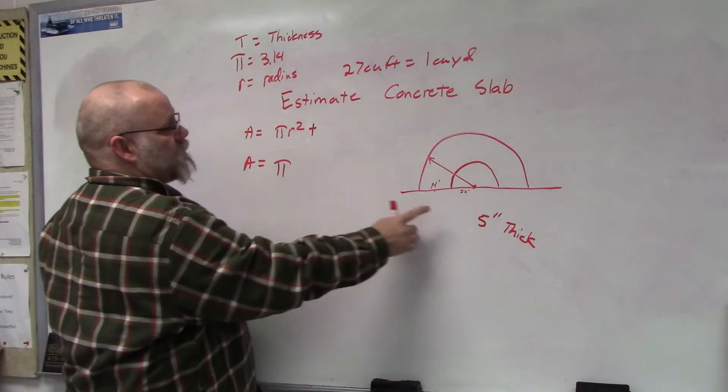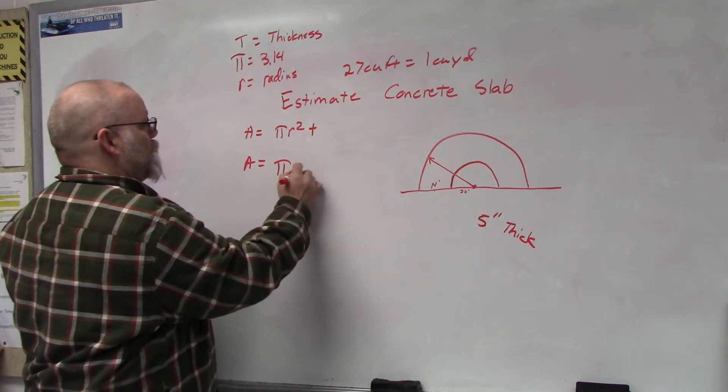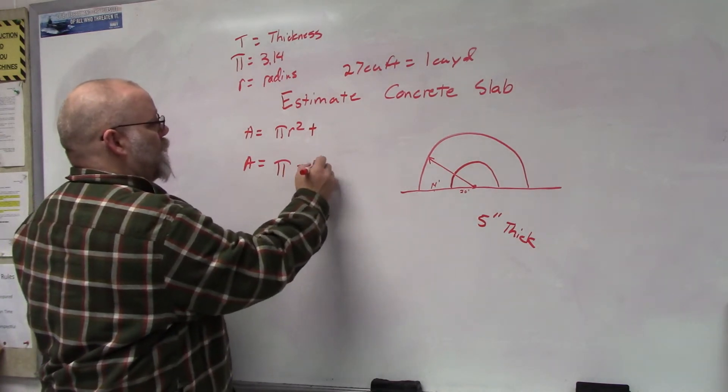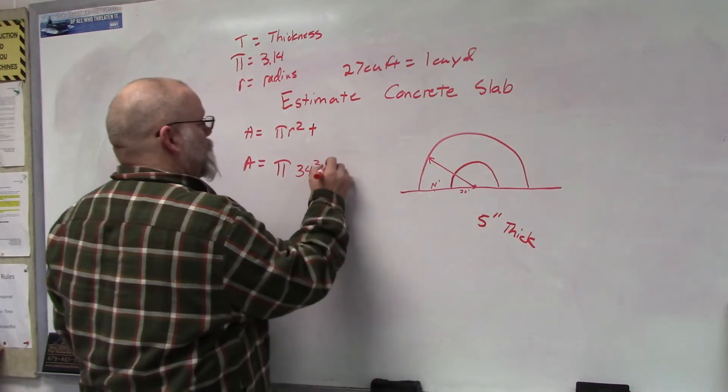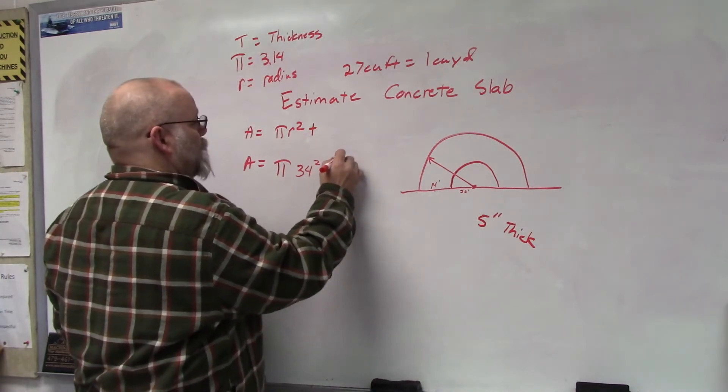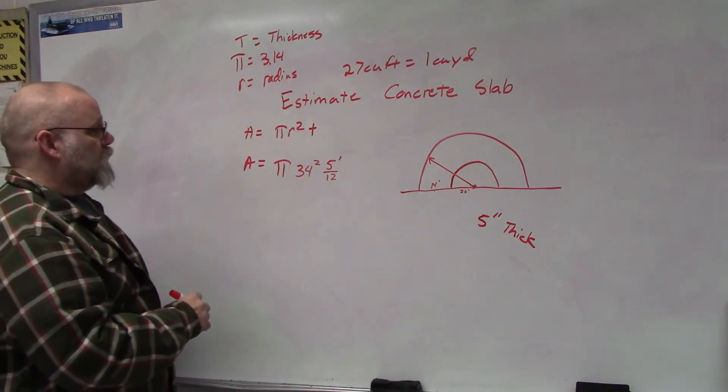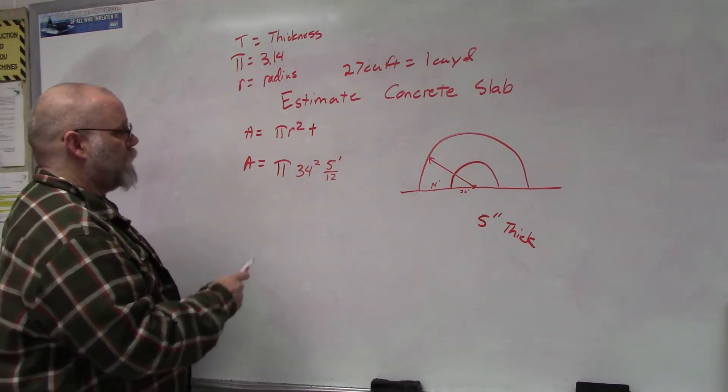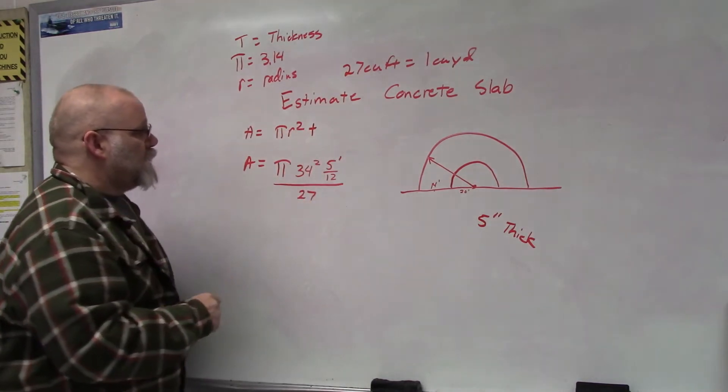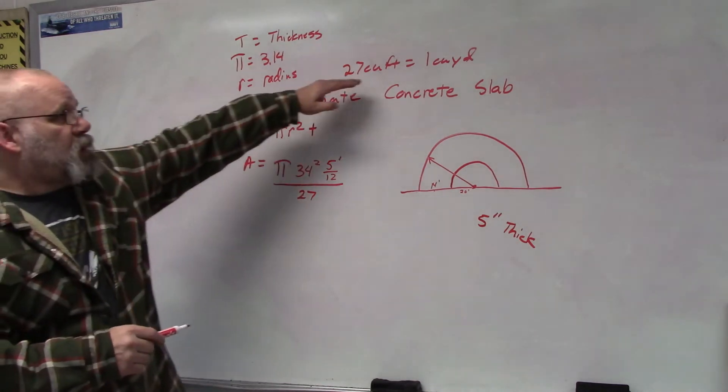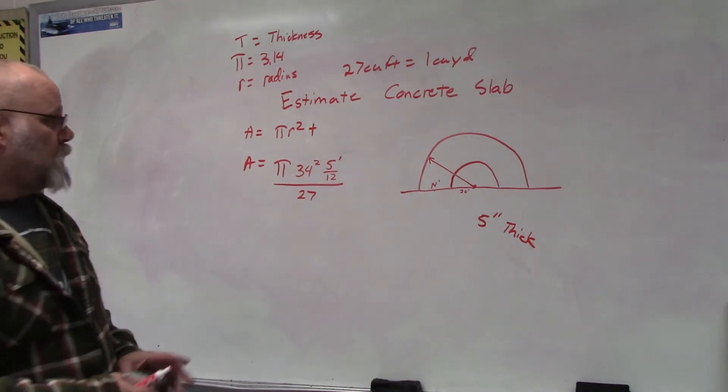Our equation then would be π times the radius, which is 20 plus 14, which is 34 feet, squared, times 5 inches thick. That would be 5 over 12 feet, and then we have to divide by 27 because 27 cubic feet equals one cubic yard.